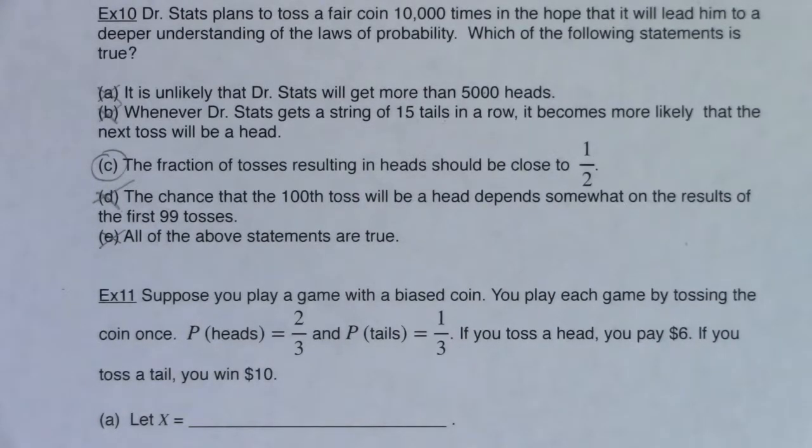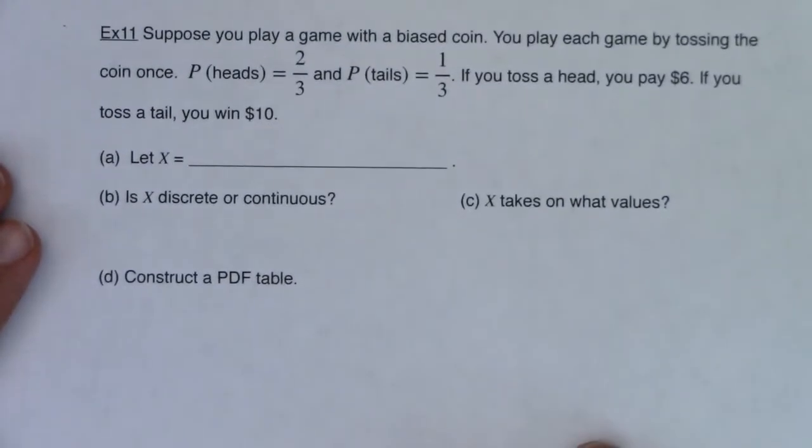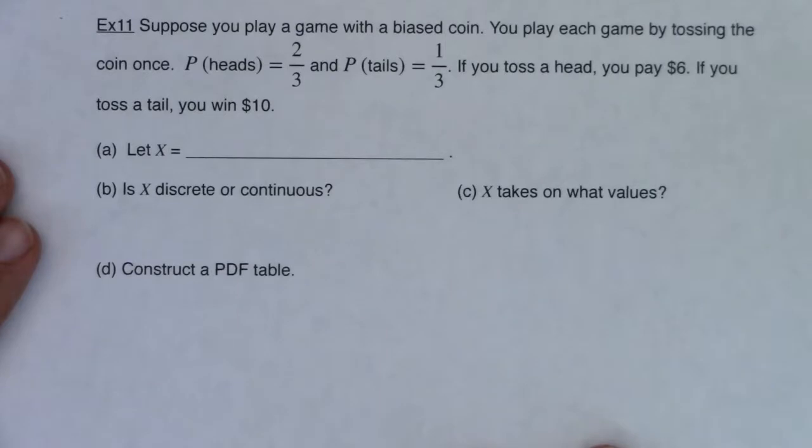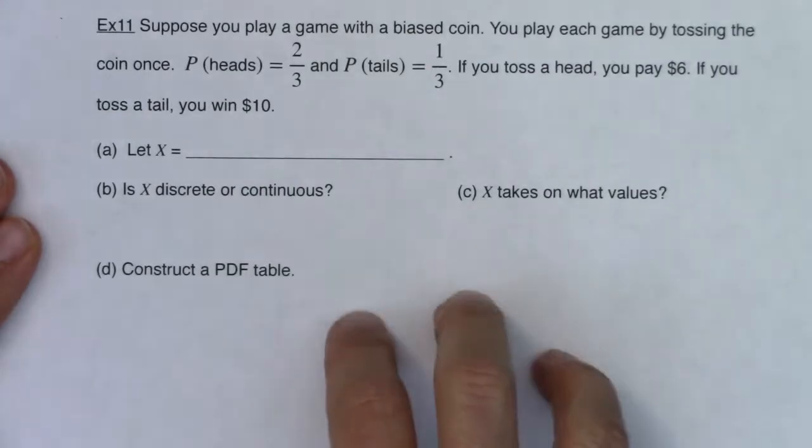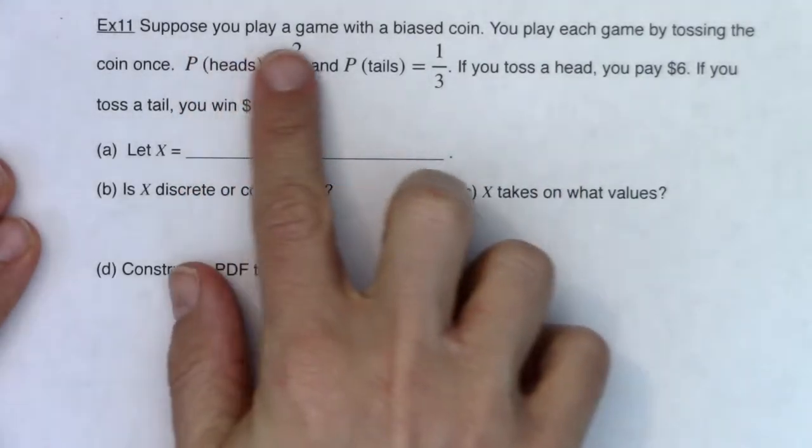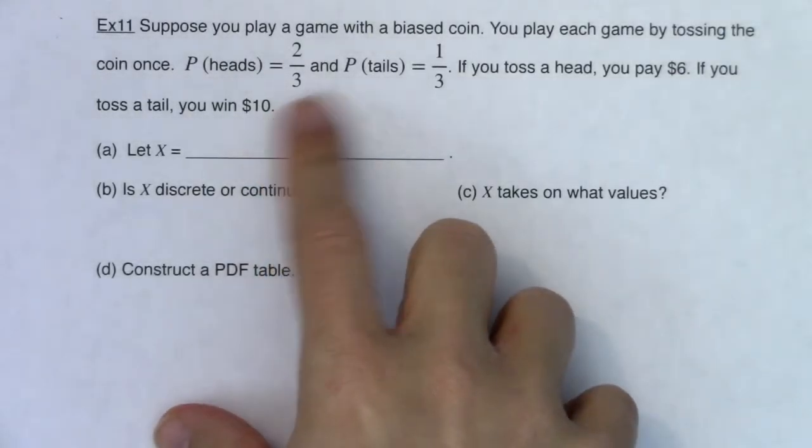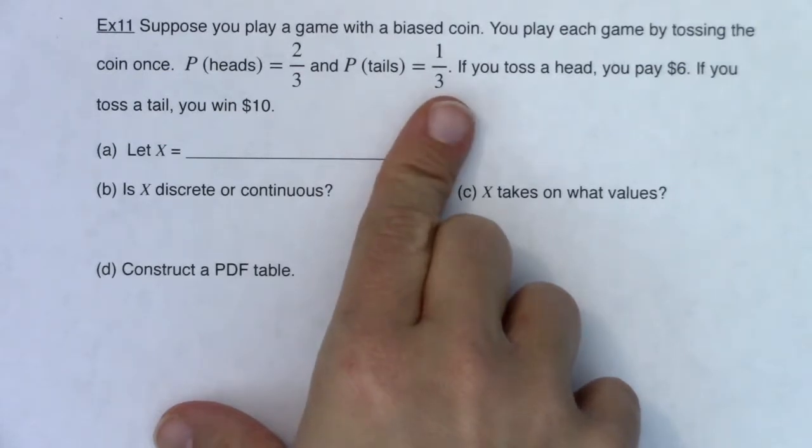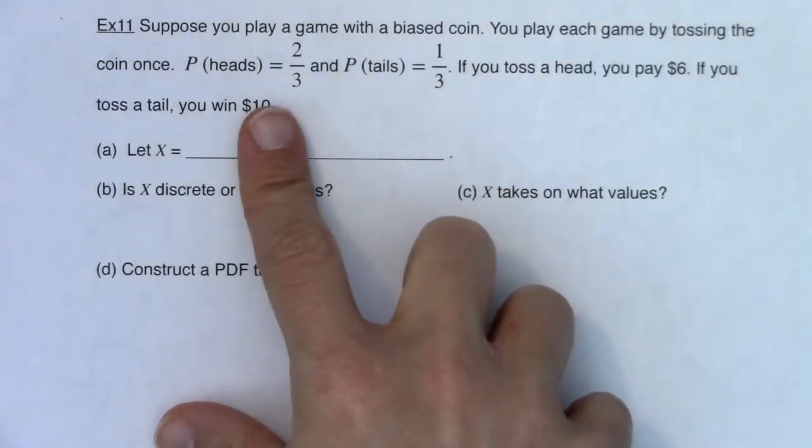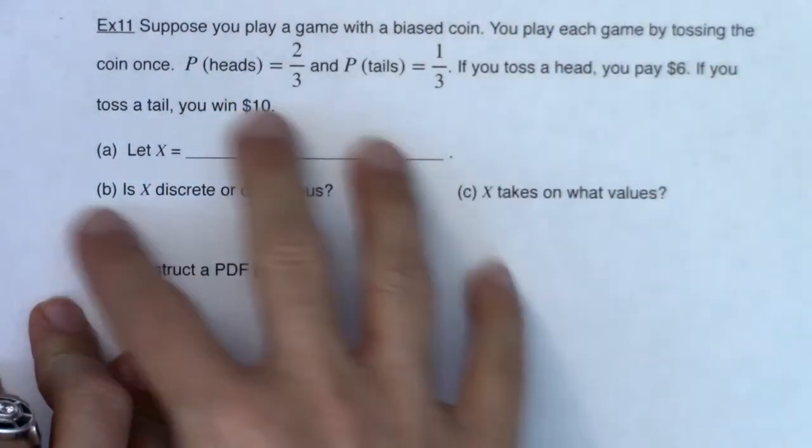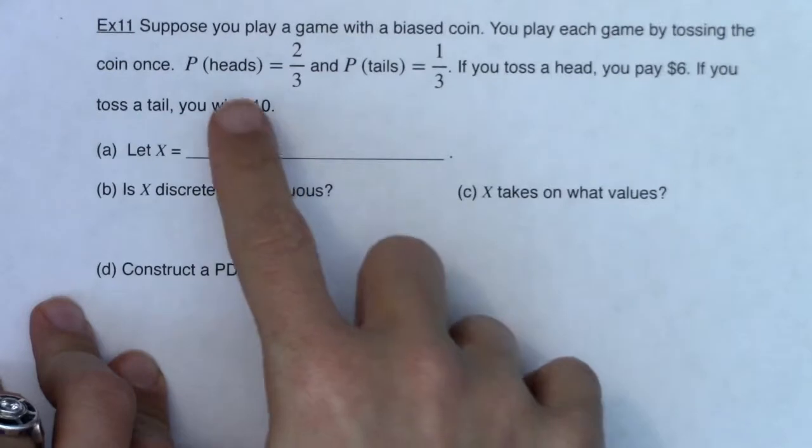With that let's try and do kind of a culminating problem from the first half of this chapter. Let's look at example 11 and we're gonna try and make this work the whole way out. As we read this you really want to think what is the variable in this problem. It's always find the variable first. So suppose you play a game with a biased coin. You play each game by tossing the coin once. The probability of heads is two thirds. The probability of tails is one third. If you toss a head you pay six dollars. But if you toss a tail you win ten dollars. So what is the variable here?